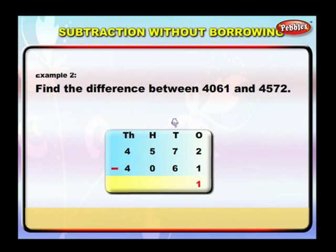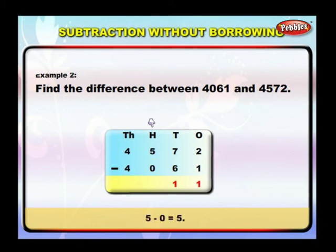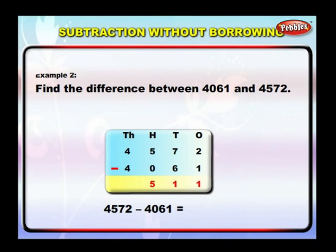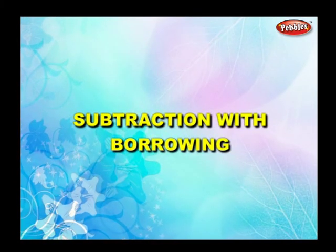Subtract ones: 2 minus 1 is equal to 1. Subtract tens: 7 minus 6 is equal to 1. Subtract hundreds: 5 minus 0 is equal to 5. Therefore, 4572 minus 4061 is equal to 511.